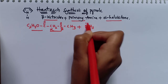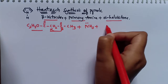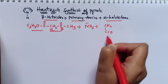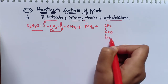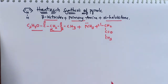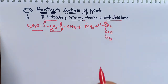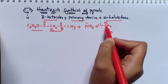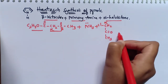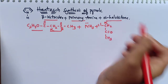The alpha-halo ketone has the structure: CH2Cl-CO-CH3. Here, Cl is attached to the alpha carbon — that is, the first carbon attached to the carbonyl functional group — so it is called the alpha-halo ketone. These are the three reactants required for the Hantzsch synthesis of pyrrole.